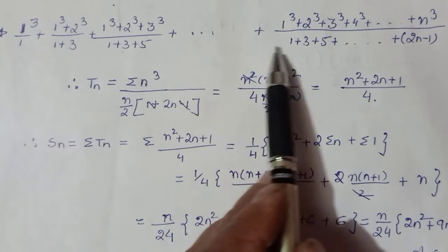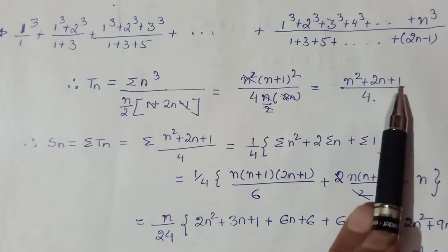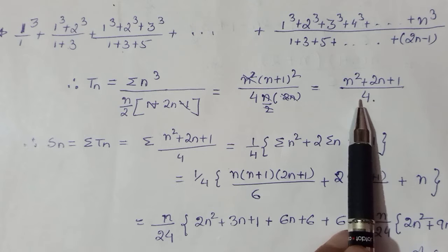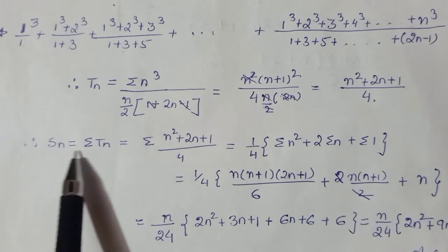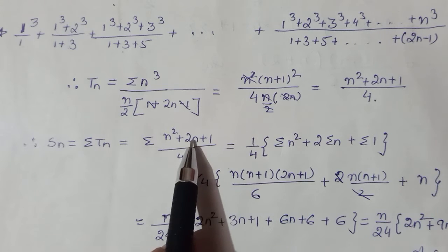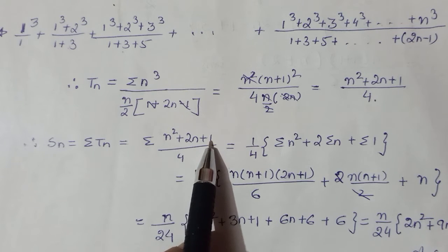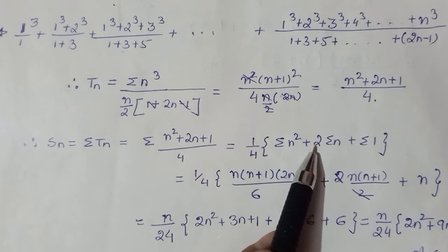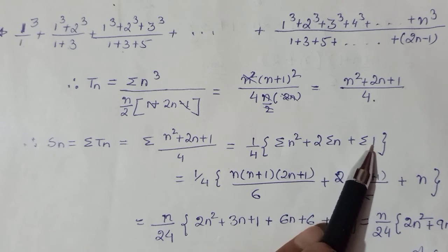So yeh bhi hamara Tn simplify hua hai. This Tn on simplification is this much. So if we had to sum this sequence, we will put this to sigma notation. If polynomial ke form mein hai, toh isme aap sigma notation laga sakti ho. Right, so Sn we know is Σ of Tn. Scalar bahar aa jaega and you just need to put sigma to wherever you have n's.